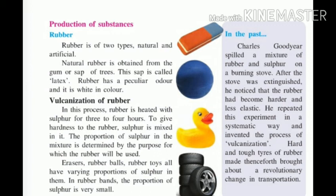Natural rubber is obtained from the latex of certain trees — the sap from the plant. From that latex we get rubber. The next topic is vulcanization of rubber. In this process, rubber is heated with sulfur for three to four hours.